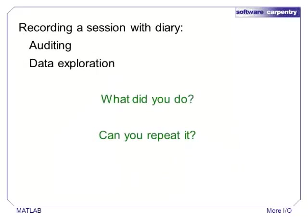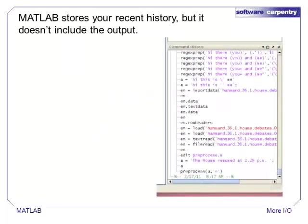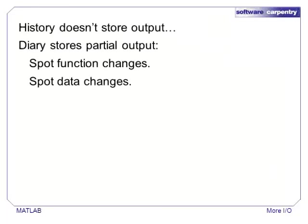Another important use of printed output is for auditing during data exploration. If you are exploring several kinds of analysis, journaling with the diary function can help keep track of what commands were run and what their output was. MATLAB always tracks the history of commands that were run from the standard prompt. These can be accessed from the history screen or by typing the up key in the prompt. History gets us halfway there — it stores what commands we ran, but it does not store a transcript of the actual output.